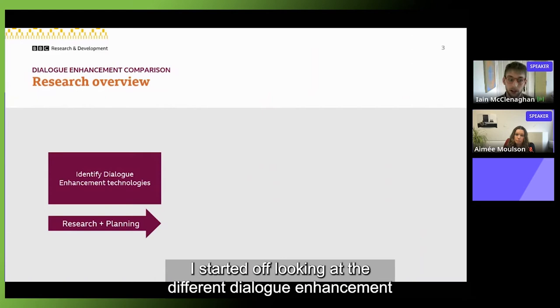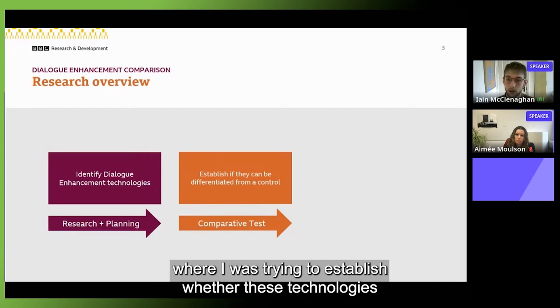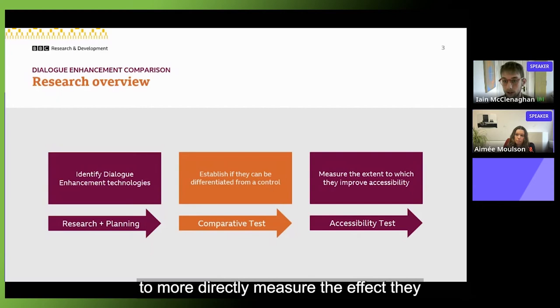So when I'm considering accessibility I've split that up into three measures: clarity, that's to do with could somebody actually understand the word that was spoken; quality, has the immersion been maintained; and also effort, what was the cognitive load on somebody to understand the dialogue. I think all of these things together are important to consider. So as an overview of where my research has been going, I started off looking at the different dialogue enhancement technologies that were candidates for being evaluated.